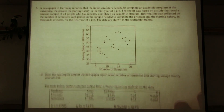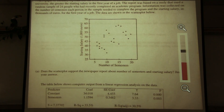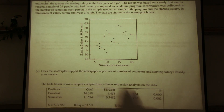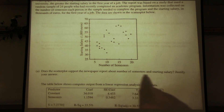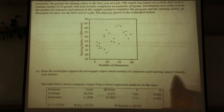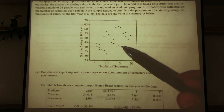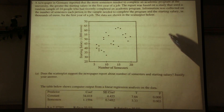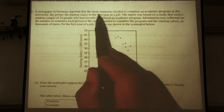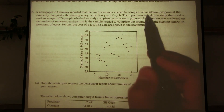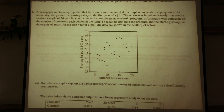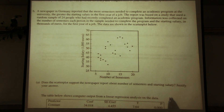So here's our scatterplot. The question asks: does the scatterplot support the newspaper's report about number of semesters and starting salary? This is asking whether the scatterplot is consistent with the claim that the more semesters needed to complete an academic program, the greater the starting salary — basically, is there a positive association between those two variables?